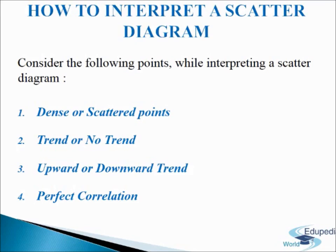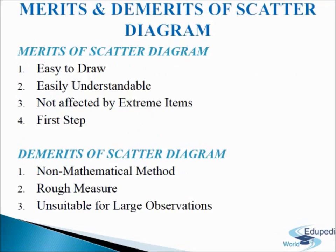This is how we will interpret our scatter diagram. Now let us discuss some merits and demerits of scatter diagram. Merits: First, simplicity — it is a simple and non-mathematical method of studying correlation. Second, easily understandable — it can be easily understood and interpreted, enabling us to know the presence or absence of correlation at a single glance. Third, not affected by extreme items — it is not influenced by the size of extreme values, whereas most mathematical methods lack this quality. Fourth, first step — it is the first step in investigating the relationship between two variables.